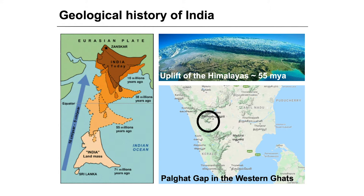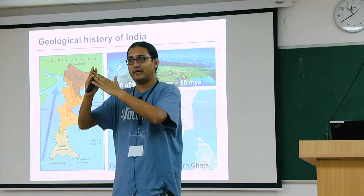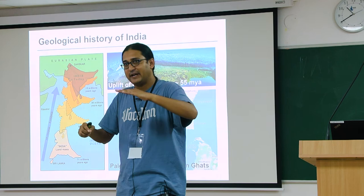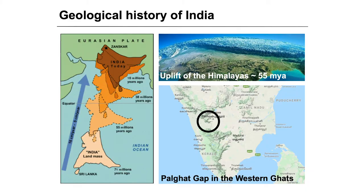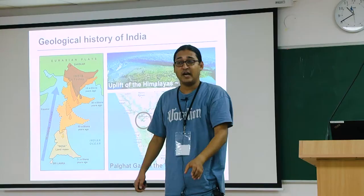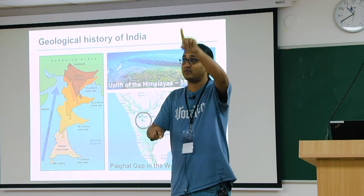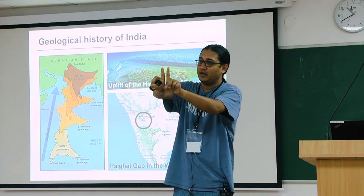The collision of the Indian plate with the Eurasian plate led to the uplift of the Himalayas. Even today the Himalayas are rising slightly because the Indian plate is still pushing north every year. Very interestingly, in the Western Ghats you have something called the Palghat Gap — mountains, then a gap, then more mountains. The mountains of Madagascar on the east coast have exactly the same gap. When Madagascar and India split, half that gap was left behind in Madagascar, and the Palghat Gap reflects that India and Madagascar were once joined.